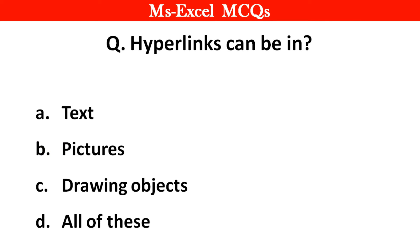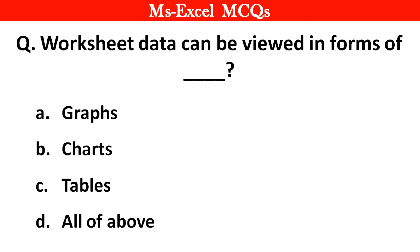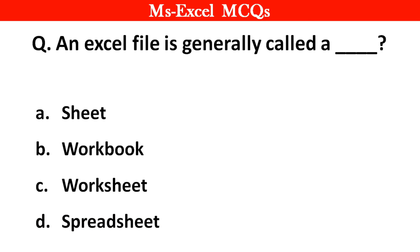Next question. Hyperlinks can be dash. The right answer is option A: Text. Next question. Which one is not a function in MS Excel? The right answer is option B: AVG (average). Next question. Worksheet data can be viewed in the form of dash. The right answer is option D: All of the above.